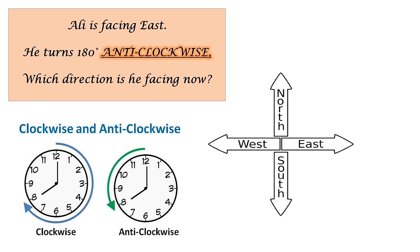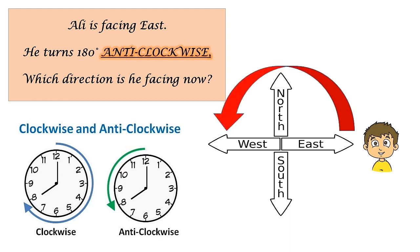Ali now is in the east. He turns 180 degrees anticlockwise. It means he is going to the opposite direction of the hand of a clock. Two quarters. Which direction is he facing now? West. Good.